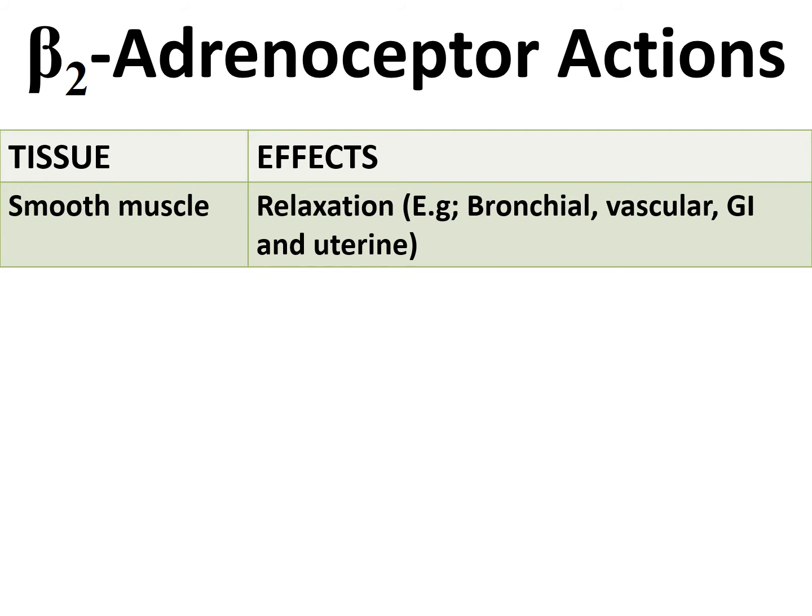Beta-2 receptors are mainly located on smooth muscles, predominantly bronchial smooth muscle, where they cause bronchodilation. This is the basis for using salbutamol — known by brands such as Asthalin — in bronchial asthma and COPD, providing symptomatic relief by allowing easier breathing. In vascular smooth muscle, beta-2 causes relaxation and vasodilation, in contrast to alpha-1 and alpha-2 which cause vasoconstriction.